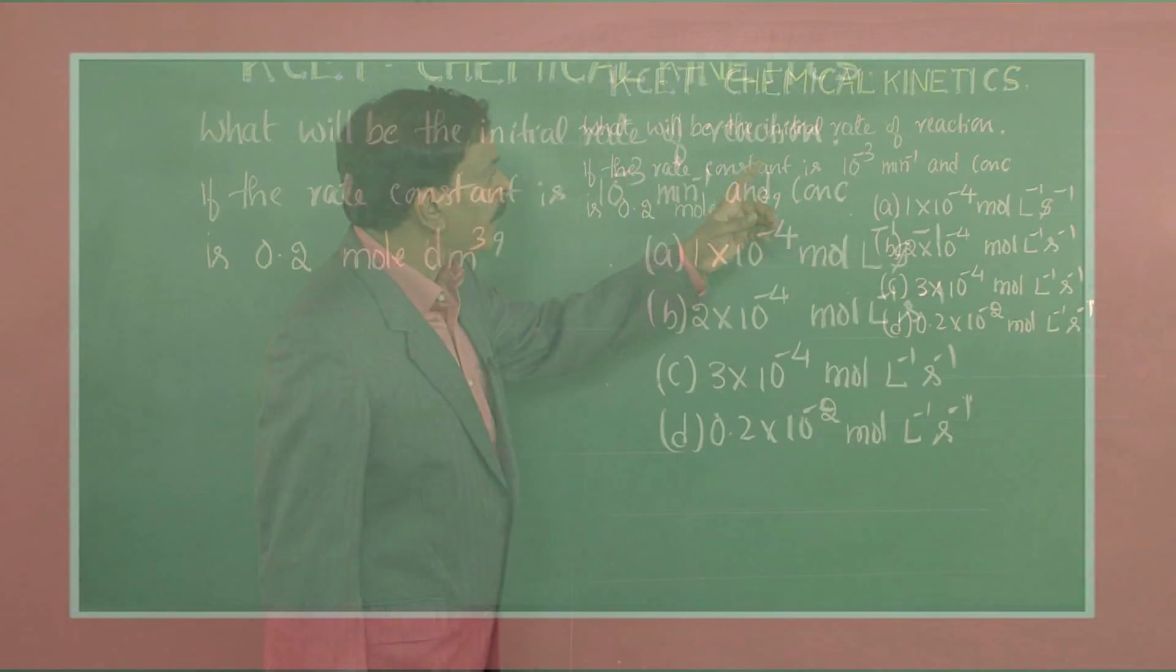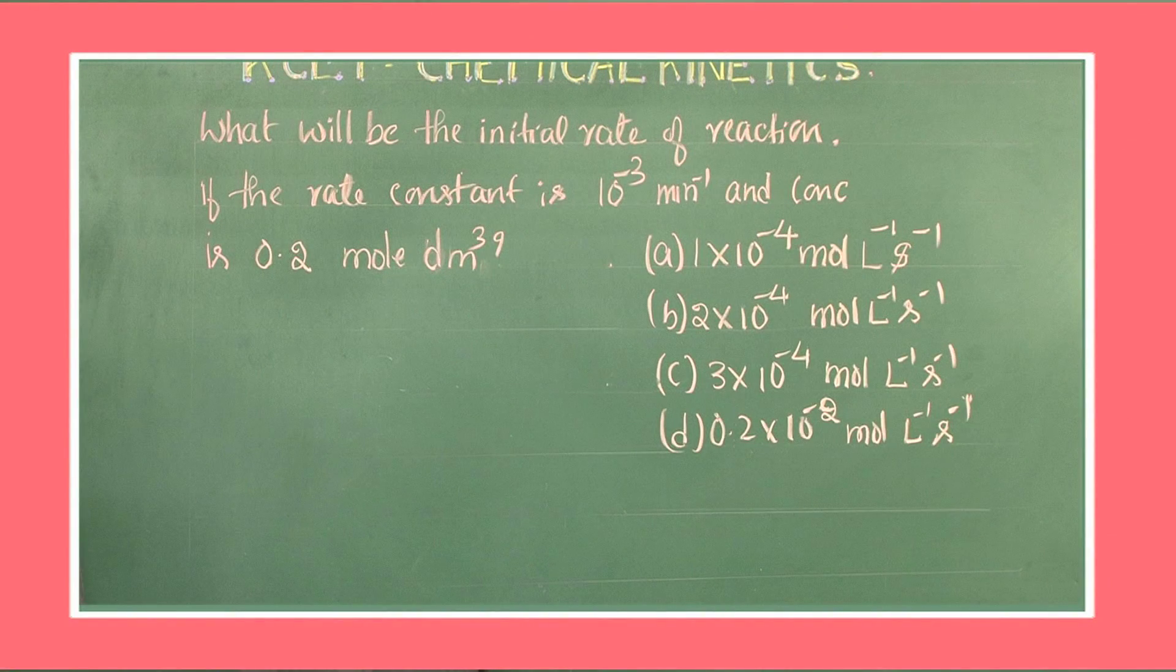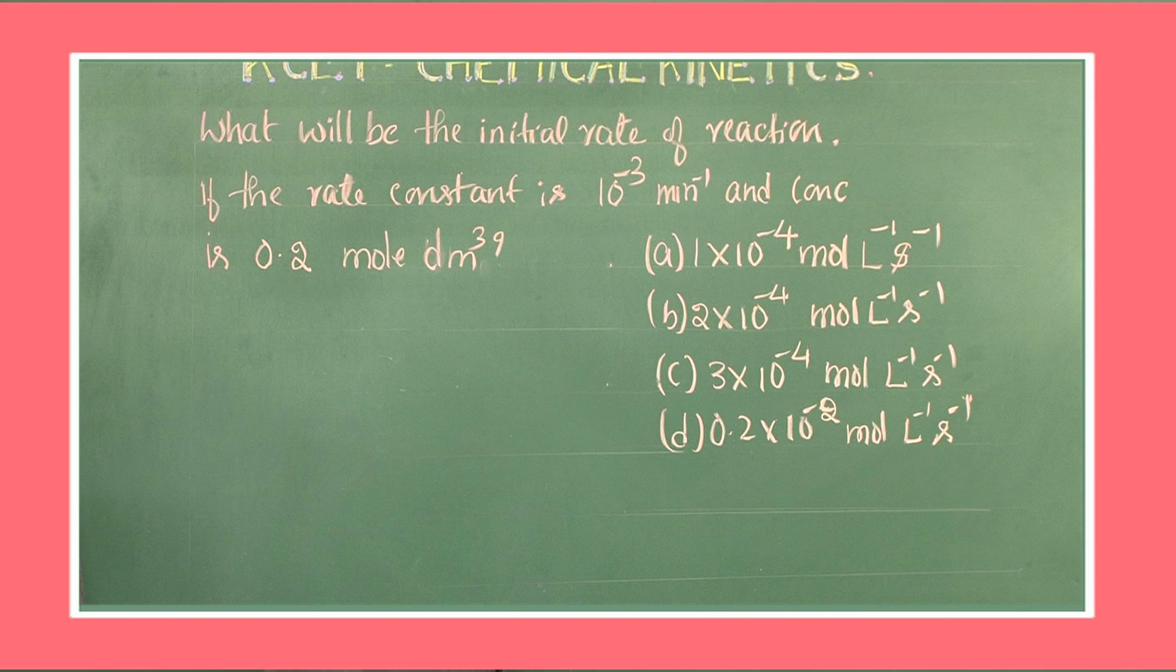What will be the initial rate of reaction if the rate constant is 10 to the power minus 3 per minute and concentration is 0.2 mol per dm cube?